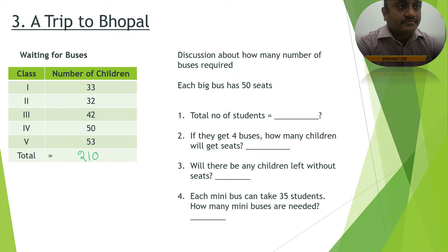The conversation between the teachers goes like this: shall we accommodate four buses or five buses? Meenakshi teacher says we need four buses, Rakesh teacher says no, we need at least five. Meenakshi says each bus has 50 seats so four buses are enough. Rakesh says let us see how many children are going class-wise: 33 in class one, 32 in class two, 44 in class three, 42 in class four, and 50 in class five — wait, 53 in class five.